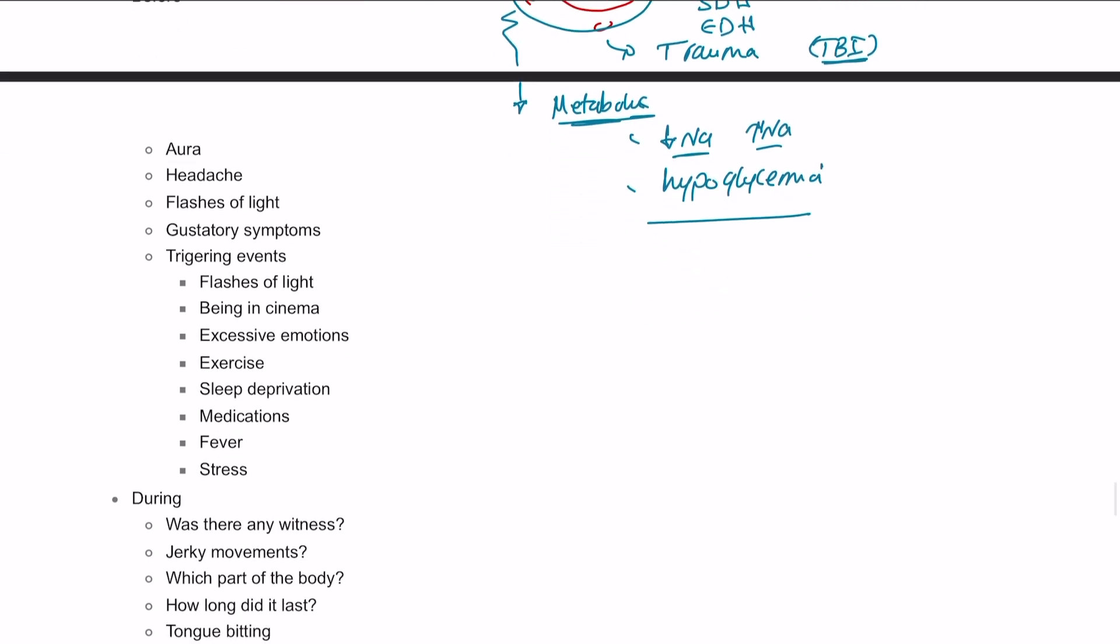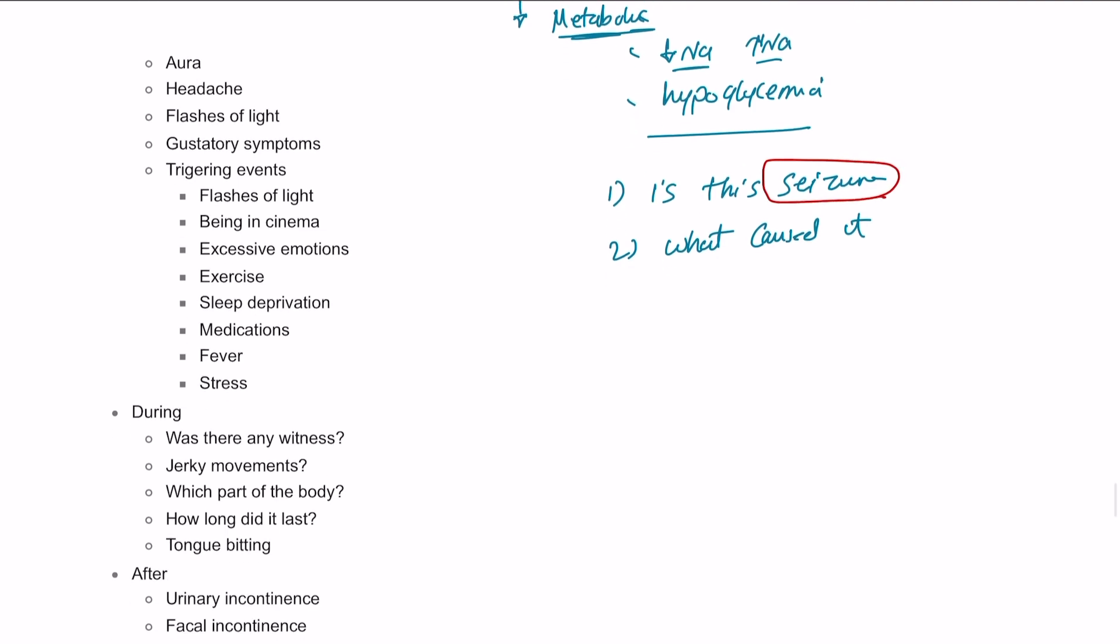Also, the other question is, the patient will be coming to you by collapse. He will not say, I had a seizure. Might be one of the possibilities, but we need to establish: one, is this seizure? And two, what caused that? And to do that, we need to do detailed assessment of that patient presentation.